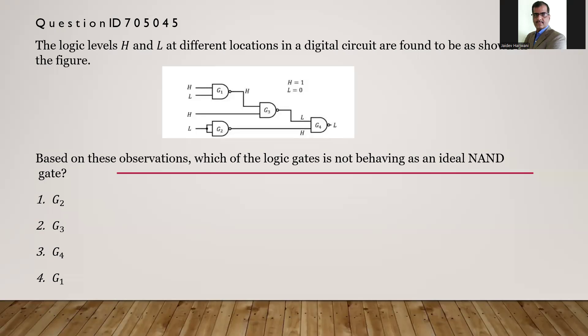Hello students, let us see one more problem from this year CSIR NET exam. In the question they have given you a NAND gate circuit. There are total four NAND gates, and in the question they're asking which NAND gate is not behaving as an ideal NAND gate.